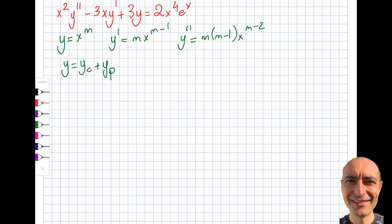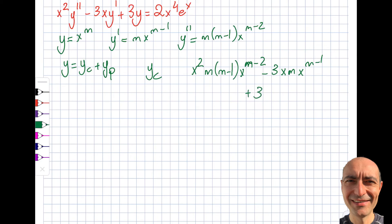Let's find yc. To do that I'll insert x² directly, so we get x² times [y''] minus 3x y', which is m·x^(m-1), plus 3y, which is x^m, equal to 2x⁴eˣ. For the homogeneous equation we set the right-hand side to zero.